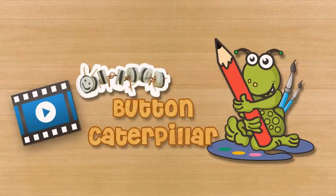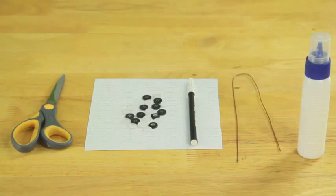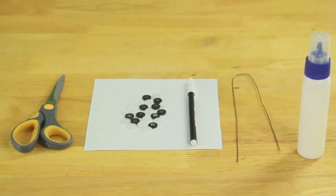Button Caterpillar. To make the button caterpillar you will need buttons, copper wire, sketch pens, chart paper, craft glue and scissors.